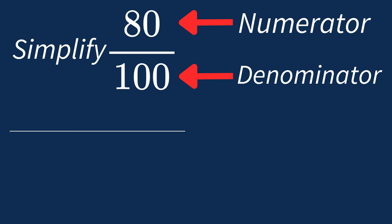First, let's list out the factors for each. For 80, the factors are 1, 2, 4, 5, 8, 10, 16, 20, 40, and 80.